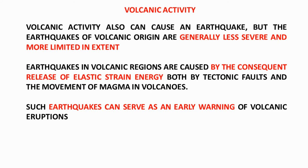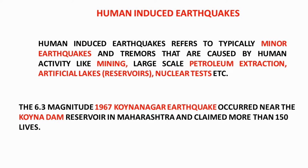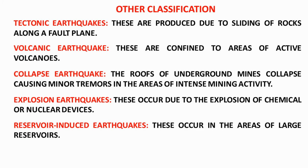Human-induced earthquakes are caused by activities such as mining, large-scale extraction of petroleum, creation of artificial lakes, and nuclear tests. A notable example in India is the 6.3-magnitude 1967 Koina Nagar earthquake, caused by the Koina Dam reservoir, which took the lives of almost 150 people. The overall classification includes five types: tectonic, volcanic, collapse (mining/roof collapses), explosion-based, and reservoir-induced earthquakes.